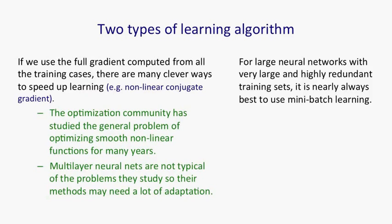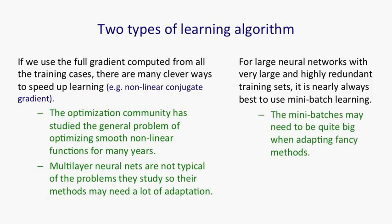But when you have highly redundant and large training sets, it's nearly always better to use mini-batch learning. The mini-batches may need to be quite big, but that's not so bad because big mini-batches are more computationally efficient.